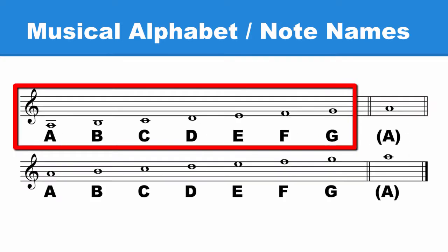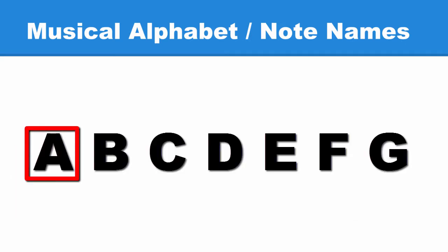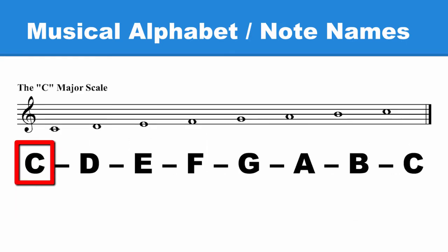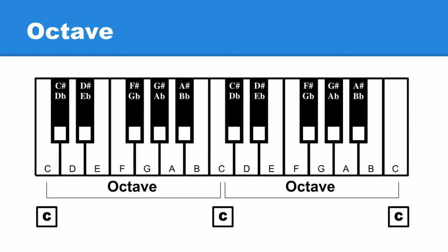Once these seven note names are used, they start over. The musical alphabet might not always start on A. It might start on C, for example. No matter what note the alphabet starts on, once you get to G, the alphabet will go back to A. When the note names start over, this is called an octave.